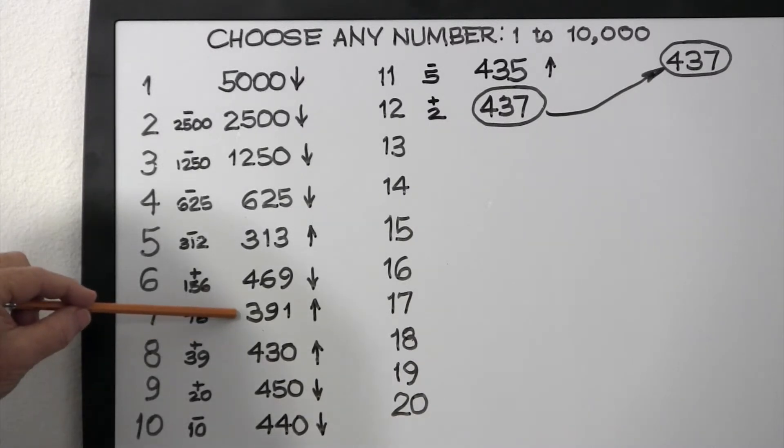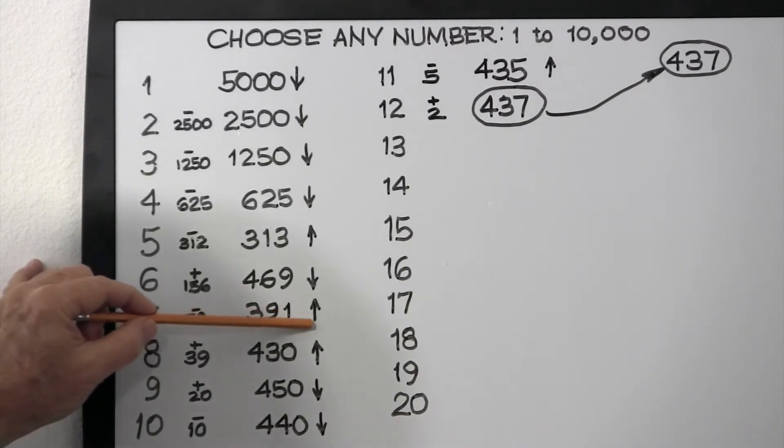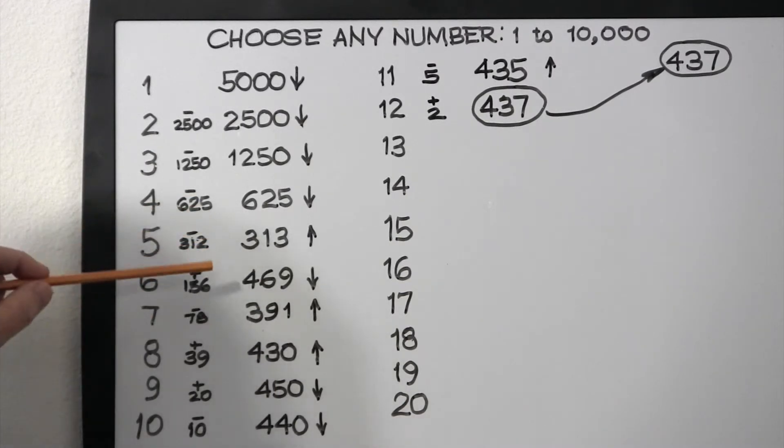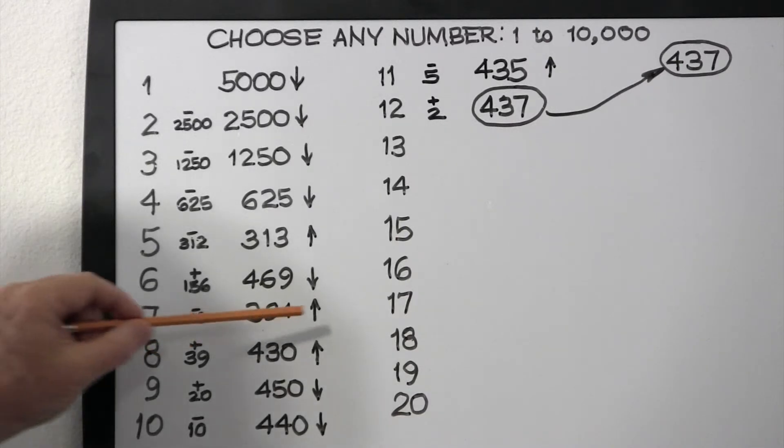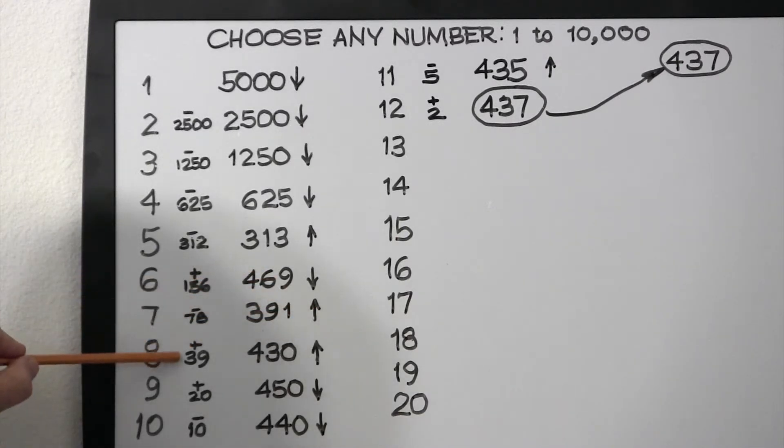Then we're told to go up. But now we're getting very, very close, because from a pool of 10,000 numbers, we now know the correct answer lies somewhere between 391 and 469. So half of 78 is 39, and we're going up, so you add 39 to 391, and that gives us 430.